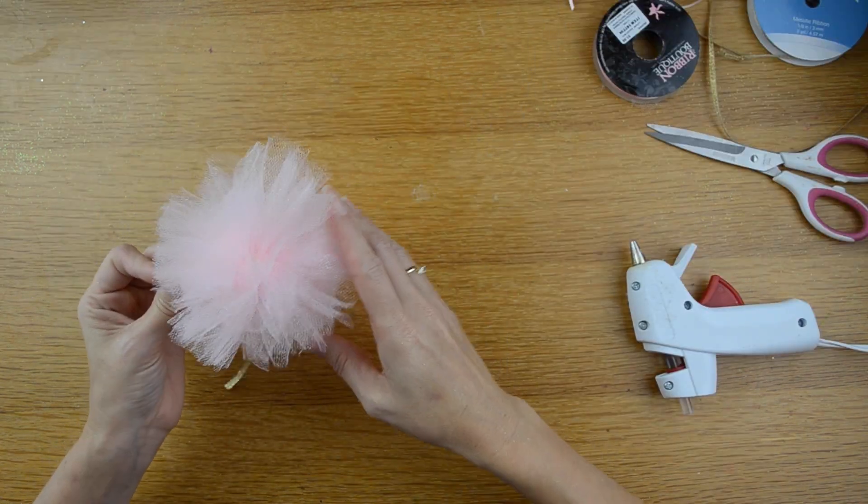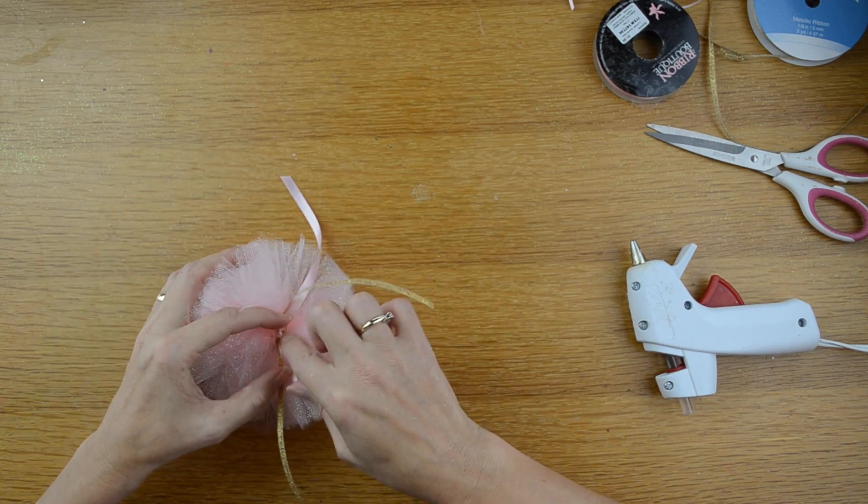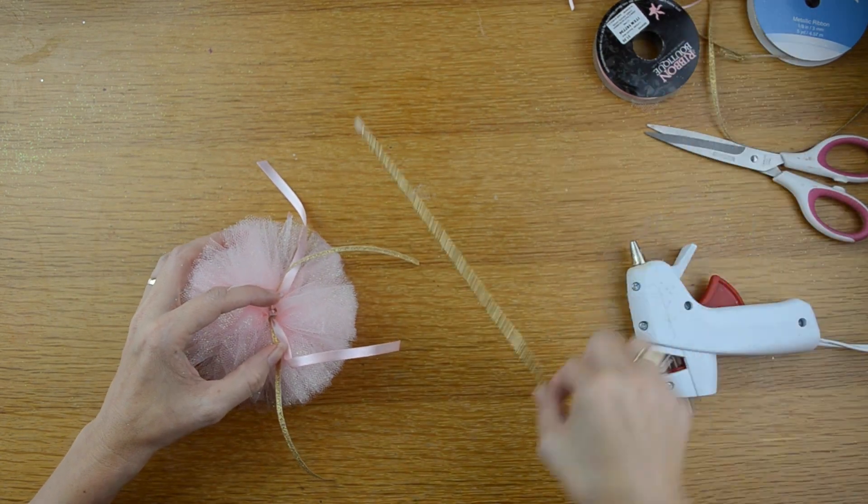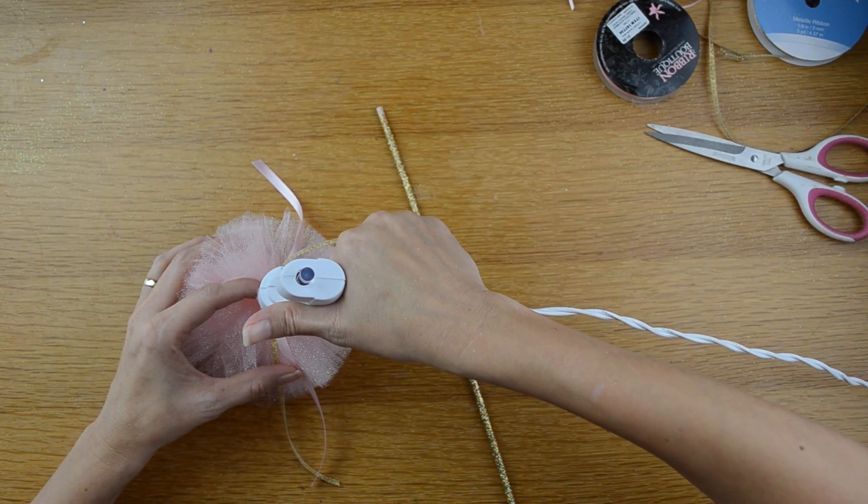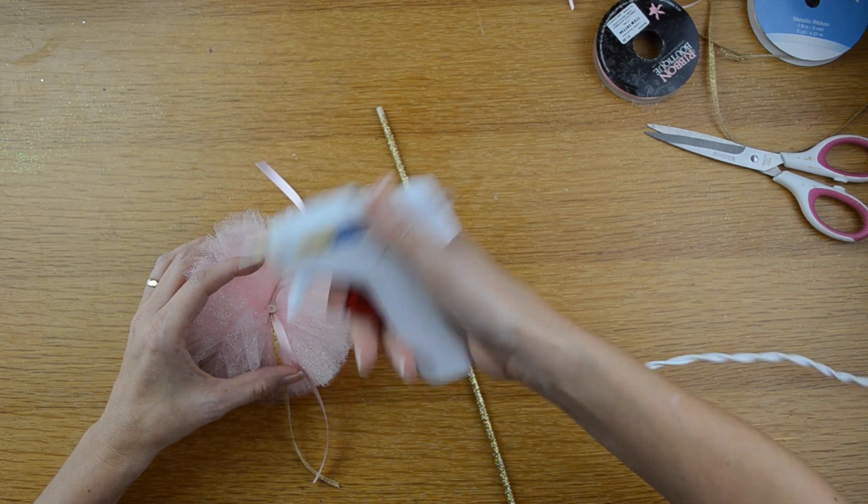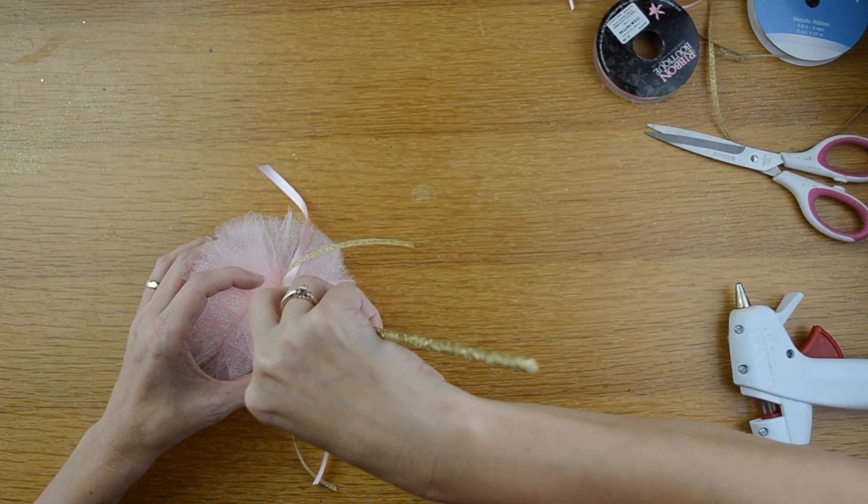So now that I have it all trimmed up, I'm going to turn it over to where I tied the knot and I'm going to of course take my dowel rod and I'm going to put hot glue all on top of that little knot there. And take my dowel rod and stick it into the glue.